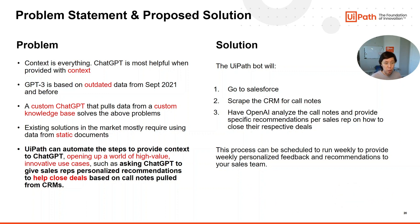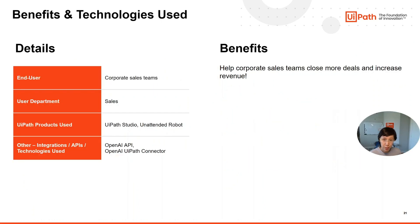This process can be scheduled to run weekly to provide weekly personalized feedback and recommendations to your sales team. Our target user is corporate sales teams, user department is sales. Products used are UiPath Studio, unattended robot. We're also using the OpenAI API and the OpenAI UiPath connector built by UiPath. Let us watch a quick demo.